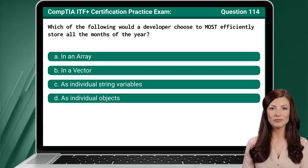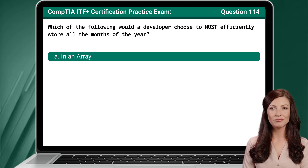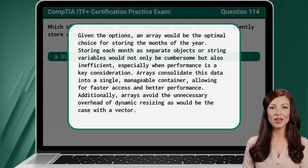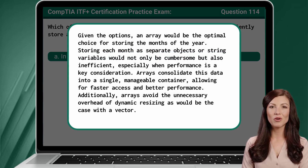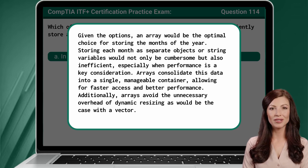Question 114. Which of the following would a developer choose to most efficiently store all the months of the year? The answer is A: In an array. An array would be the optimal choice for storing the months of the year. Storing each month as separate objects or string variables would not only be cumbersome but also inefficient, especially when performance is a key consideration. Arrays consolidate this data into a single, manageable container, allowing for faster access and better performance. Additionally, arrays avoid the unnecessary overhead of dynamic resizing, as would be the case with a vector.